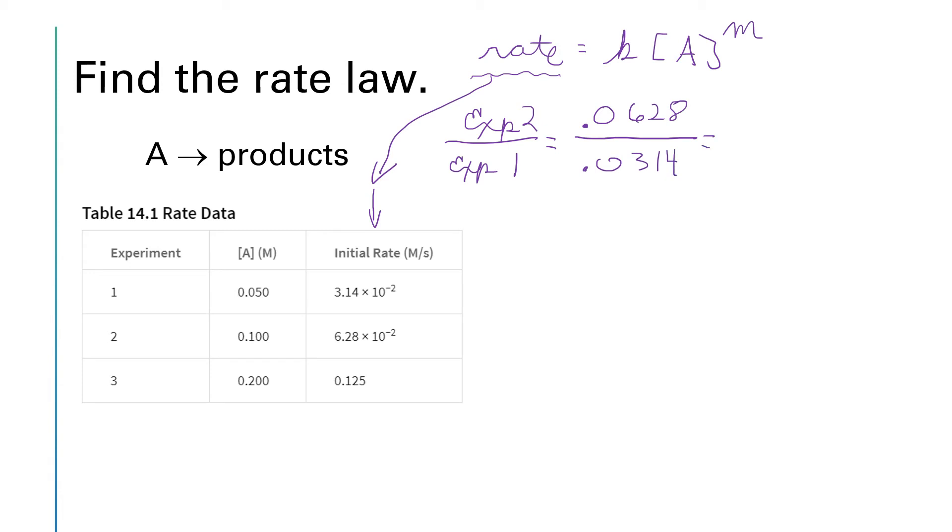On the right-hand side of our rate law, we have k times the concentration of A raised to some power. Well, in experiment number two, the concentration of A was 0.1, and we're going to raise that to the nth. And then for the right-hand side for experiment number one, we're going to have k times 0.050 raised to the nth power.